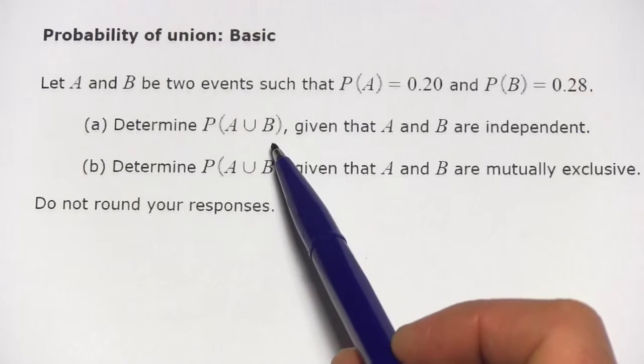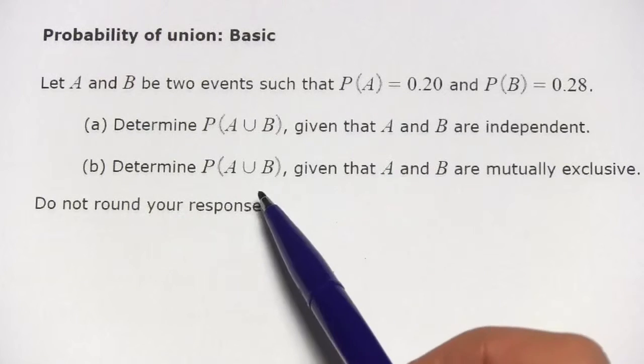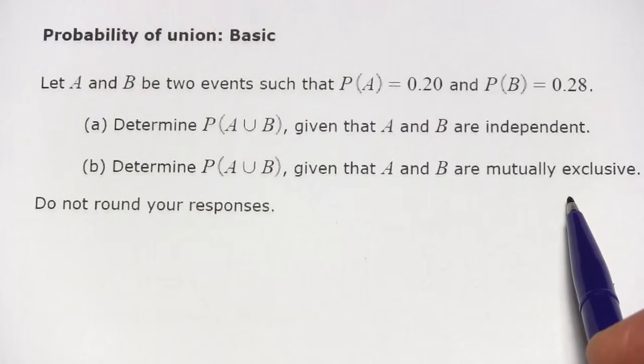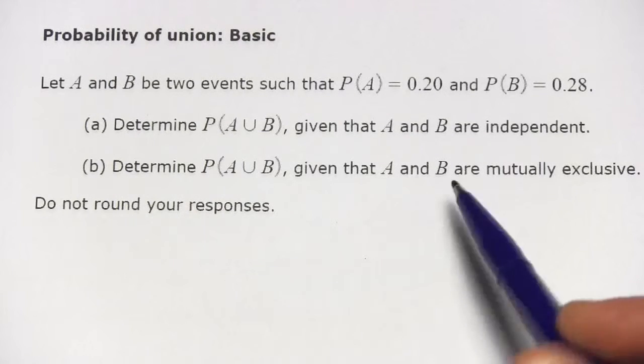Determine the probability of the union of A and B when A and B are independent, and then determine that union when A and B are mutually exclusive. Do not round your responses.